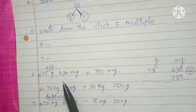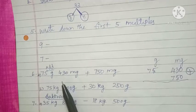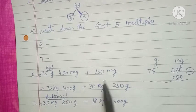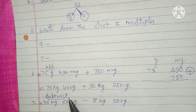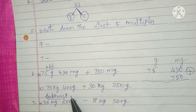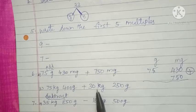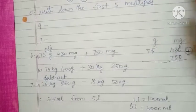Then next one, add the following: 75 grams, 430 milligrams plus 750 milligrams. Then next one sum, do the addition. Kilogram and gram is here, arrange them and find out the answer.